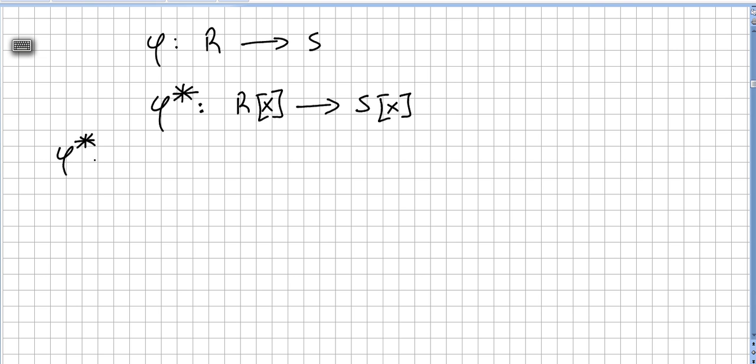And this will be given by: this R will be all elements of this polynomial R0 plus R1 X plus R2 X squared, and it will take to phi of R0 plus phi of R1 X plus phi of R2 X squared.